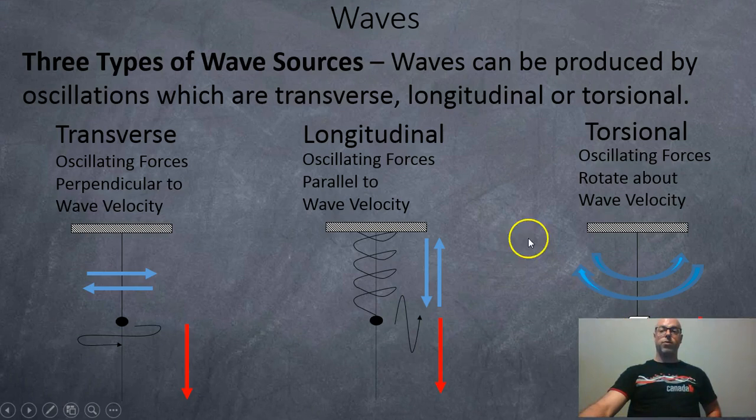Okay, so there's three main sources of waves. One's transverse. In this case, for example, a pendulum going back, back and forth, back and forth, makes a wave. The wave energy travels this way down where the forces are going left and right or perpendicular to the wave energy.